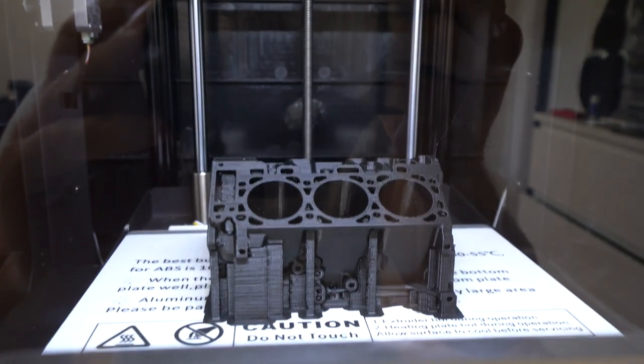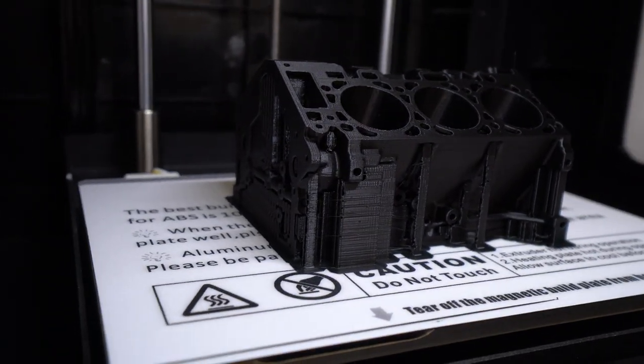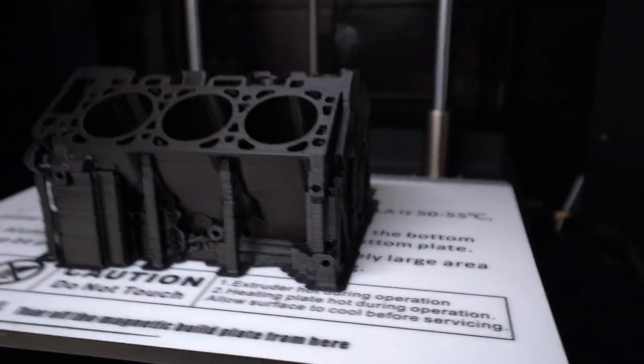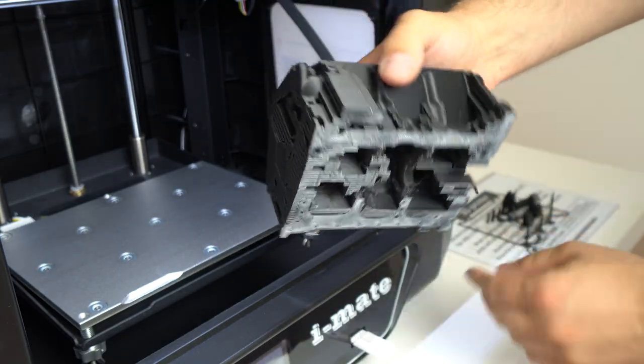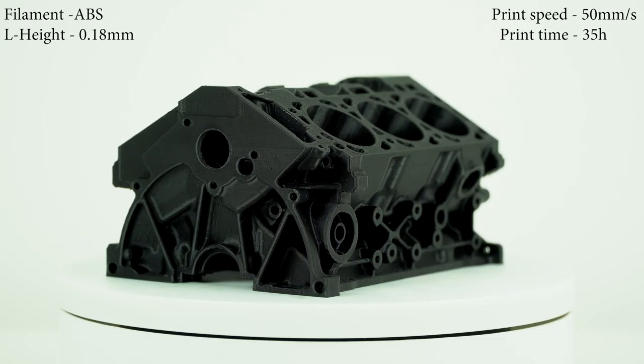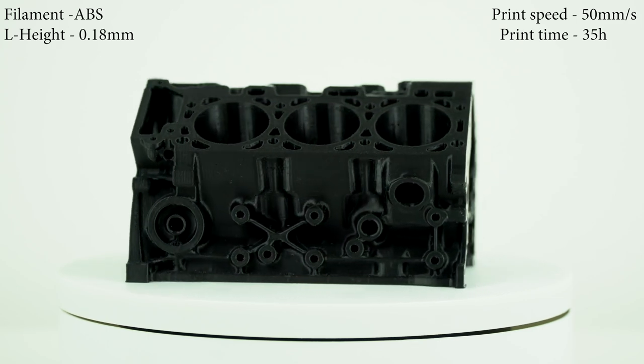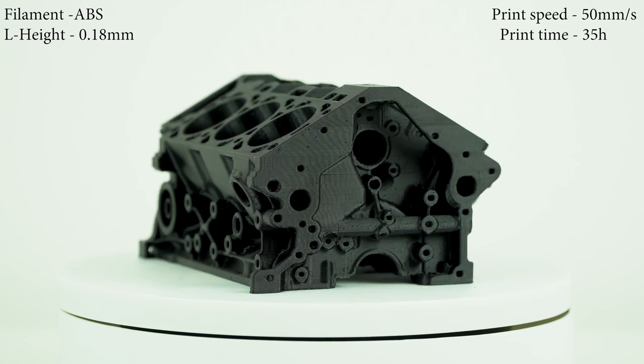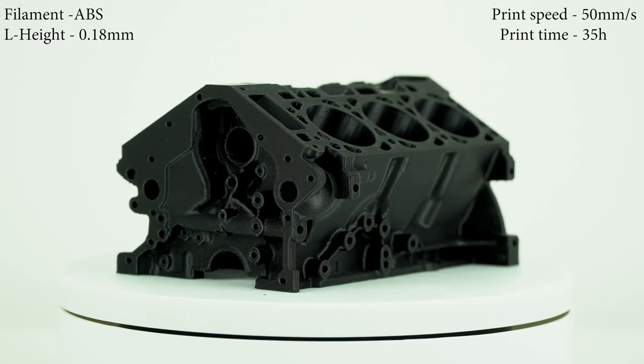And after 35 hours of printing, the V6 engine block printed in ABS was completed. And let's check it out. Well, I don't see any warping from any side which is really cool. And after that I removed the model from the build plate, I cleaned out the supports and here is a close up look. I gotta say to print out this complicated model in ABS in such great quality with zero warping and no cracked layers is very impressive. This printer is ABS king. Awesome.